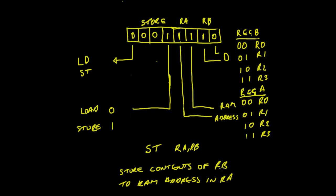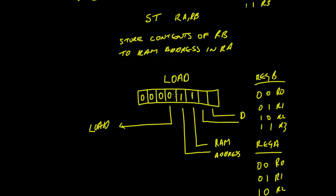The store instruction stores the contents of the register pointed to by RB. In this instance that's register 2. So it stores the contents of register 2 into the RAM address given in RA, which is register 3. It takes the value that's in register 2 and puts it in the memory location pointed to by register 3.